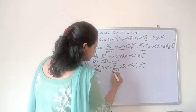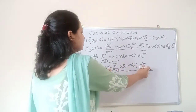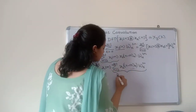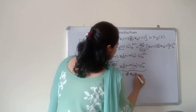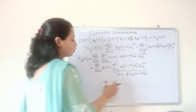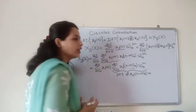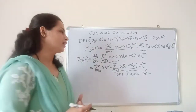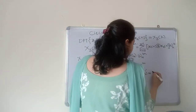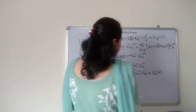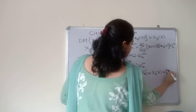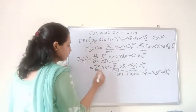Now let us see the inner summation. This is the definition of the DFT, so it is the DFT of x2 of n minus m, which is circularly periodic with period capital N. We can find this DFT with the help of the circular shifting property, because x2 of n is shifted by m units. Applying that property, the DFT equals X2 of k into the twiddle factor omega N raised to k times m.